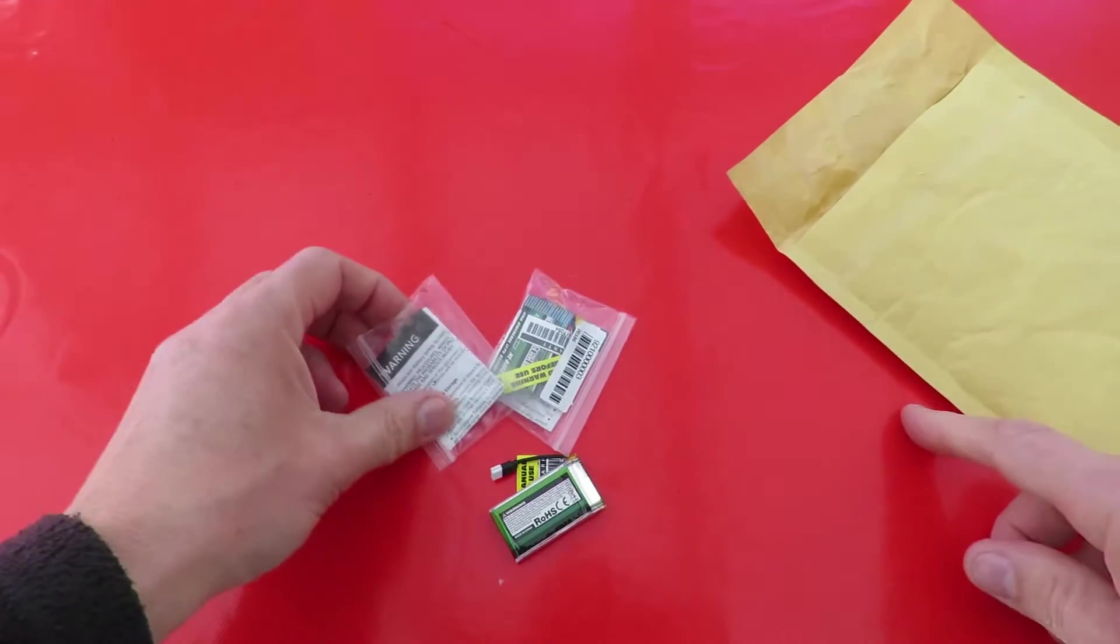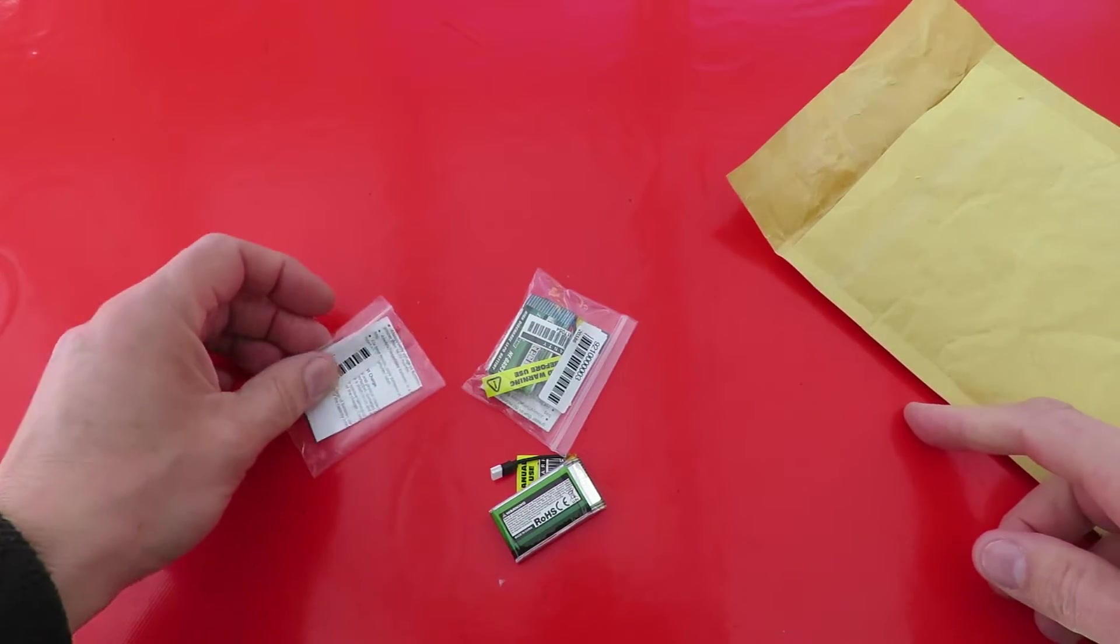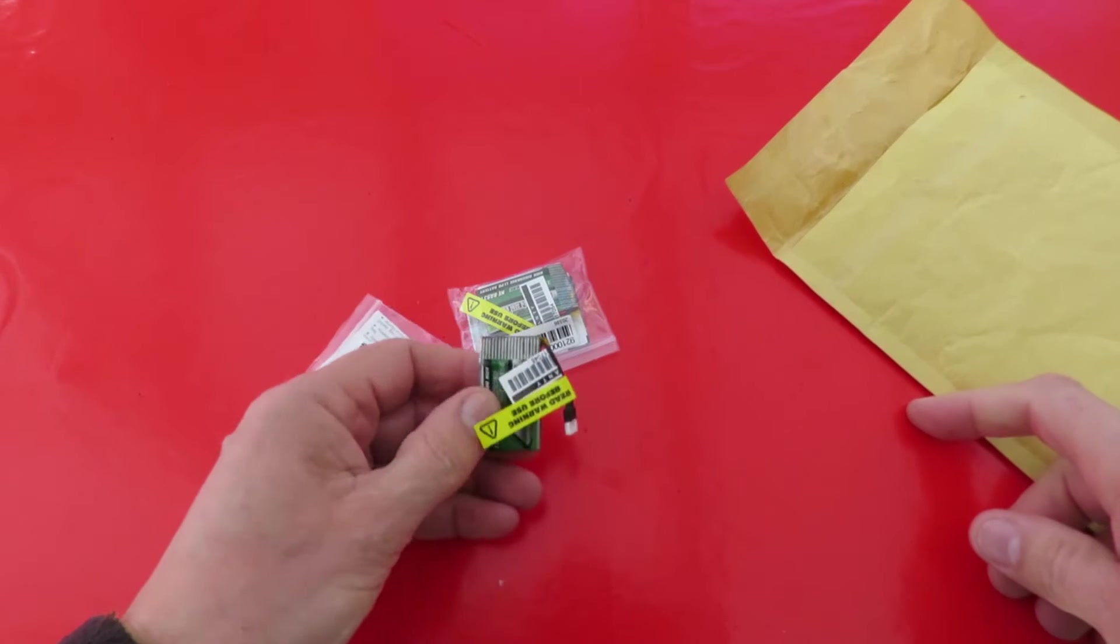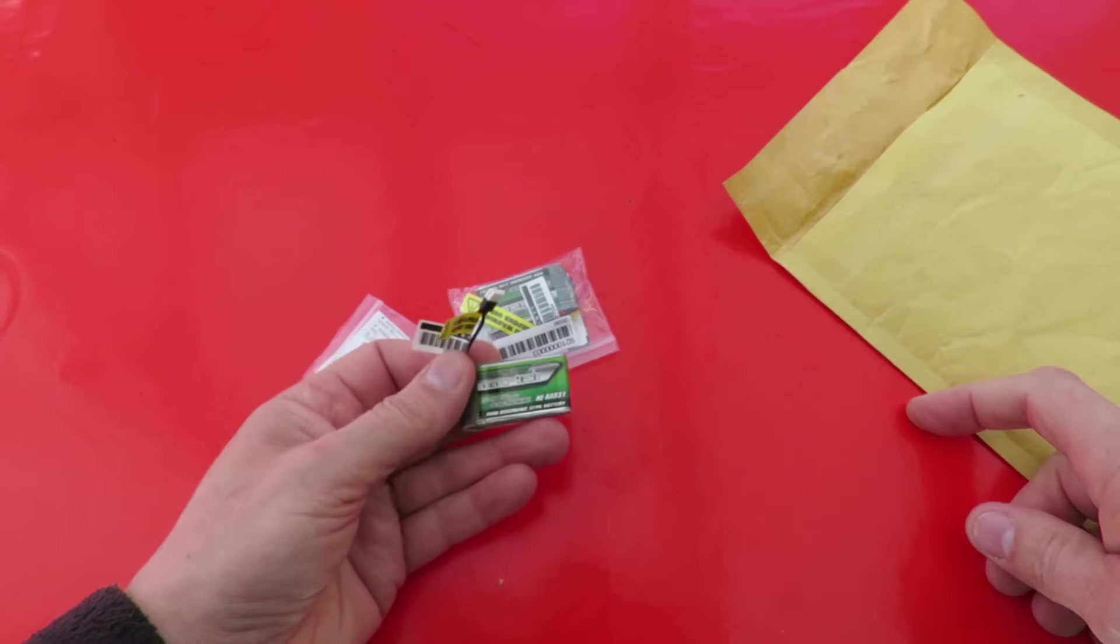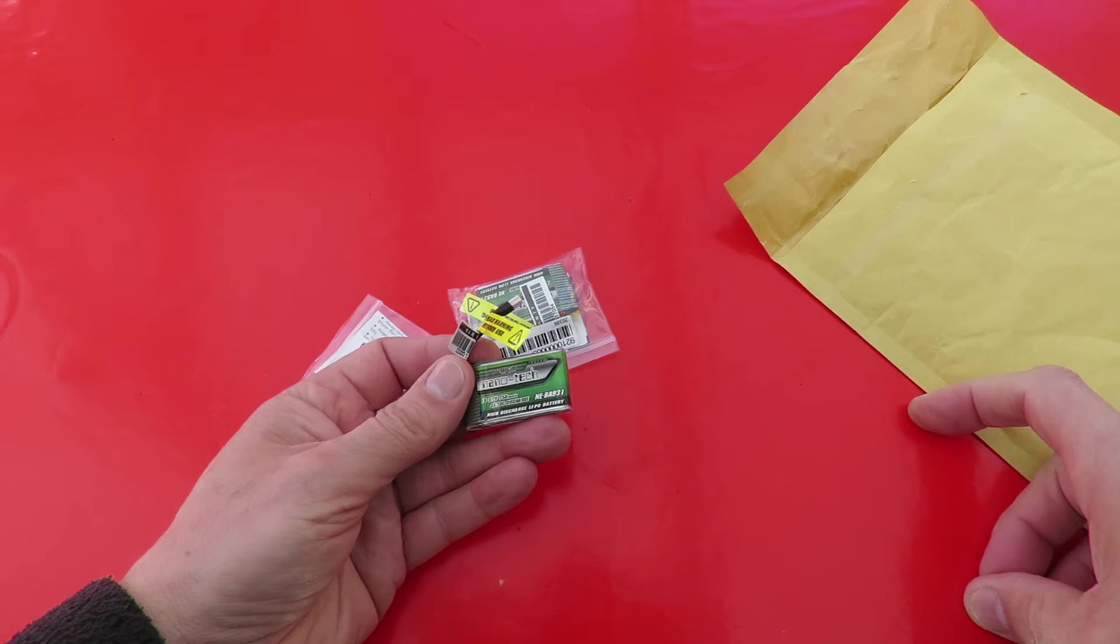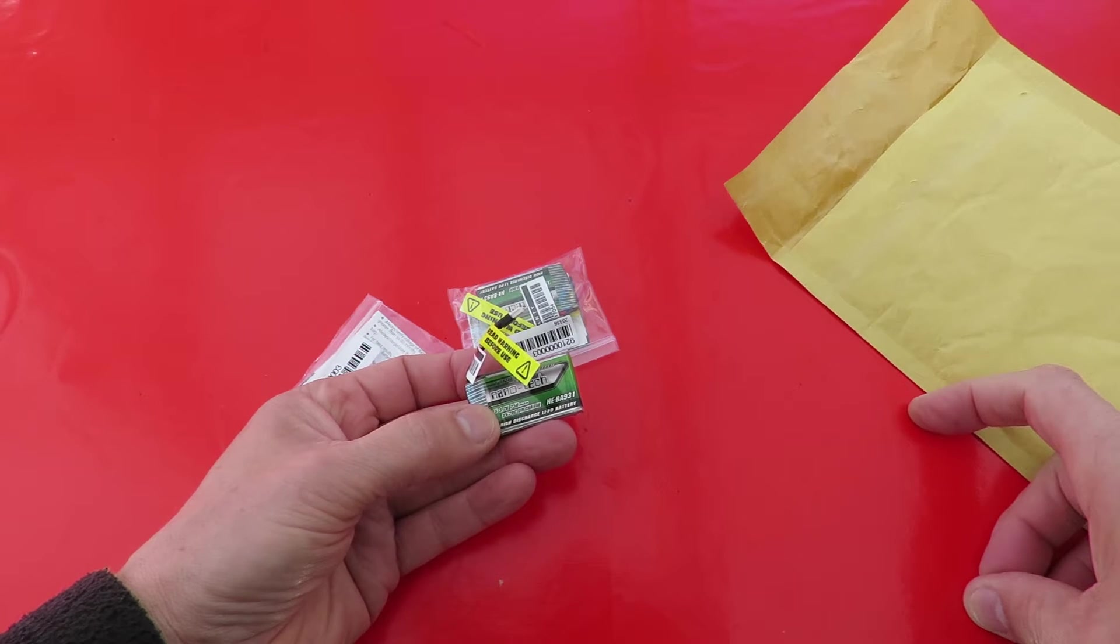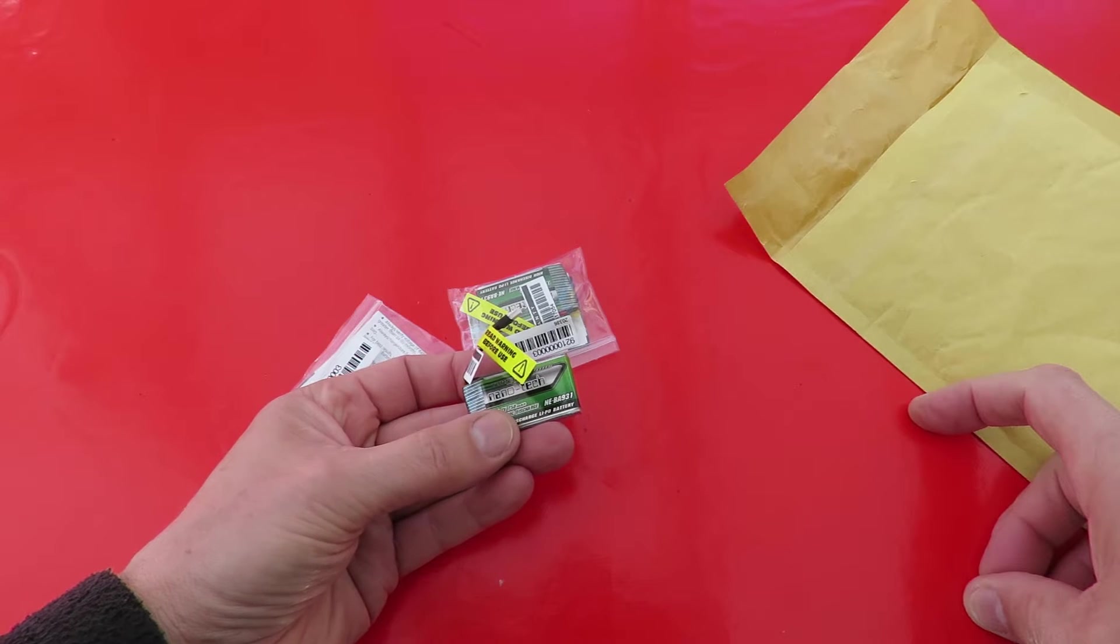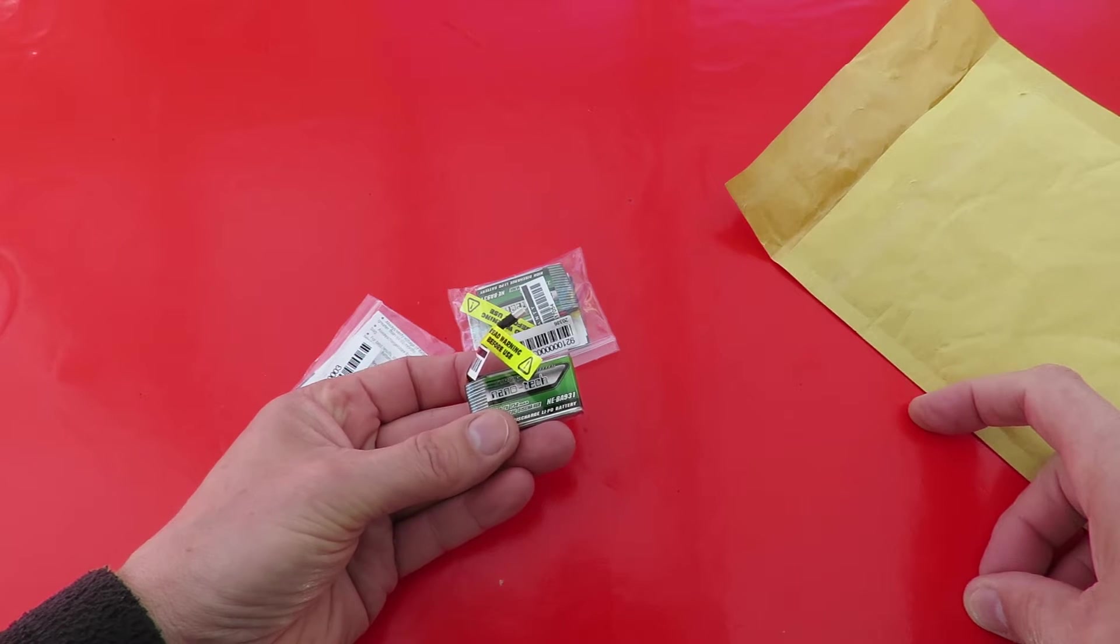All right, this is a couple of little LiPos, 1S LiPos so 3.7 volts, 750 milliamp hours.